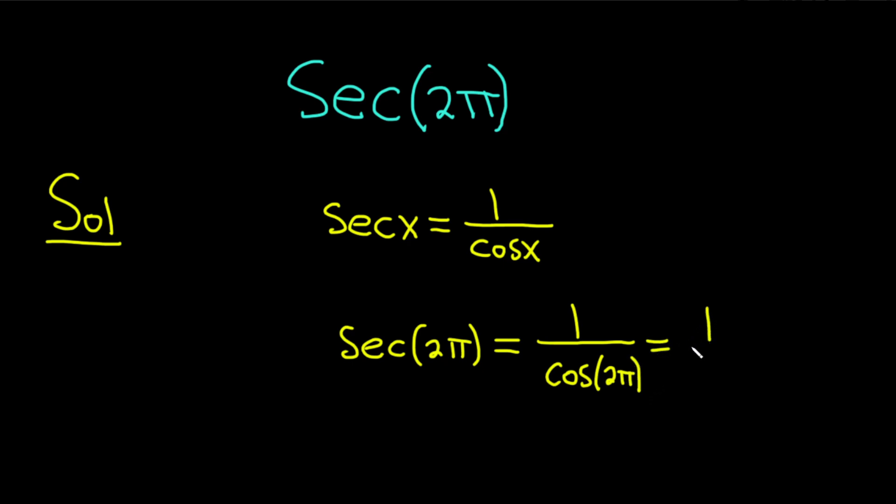So this is equal to 1 over the cosine of 2π is 1, so you just get 1 over 1, so you get 1.